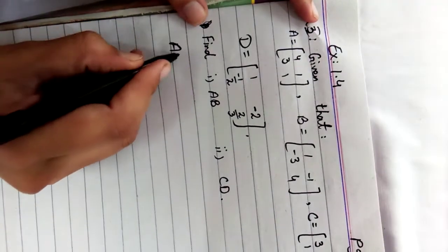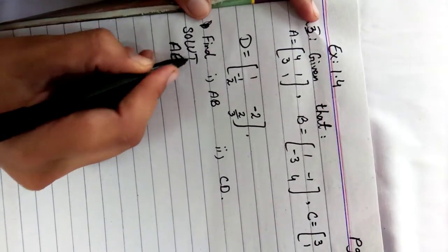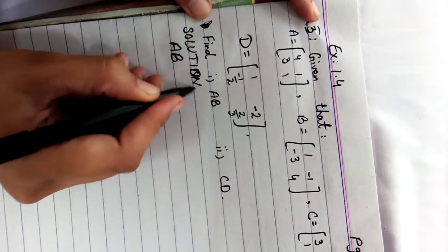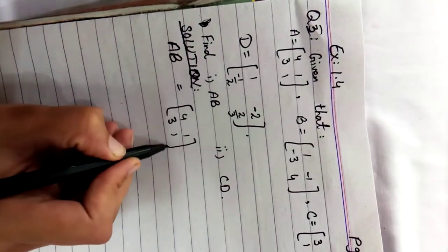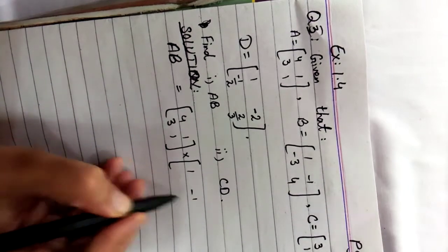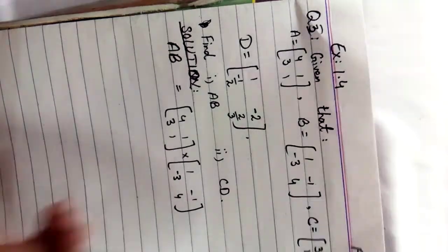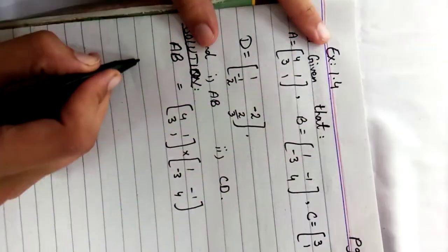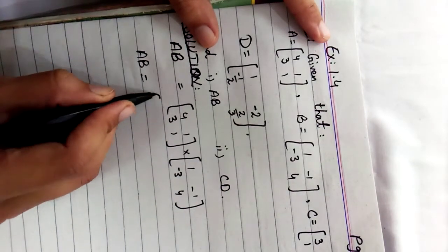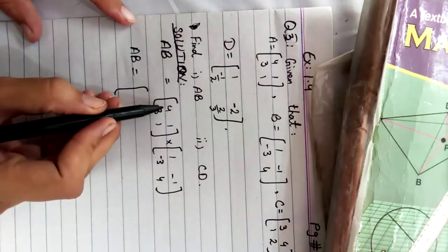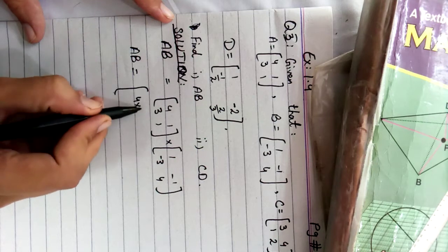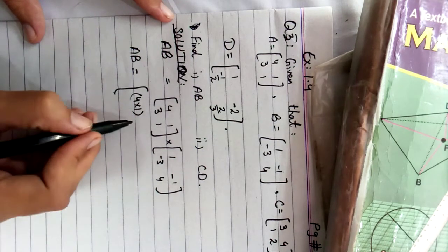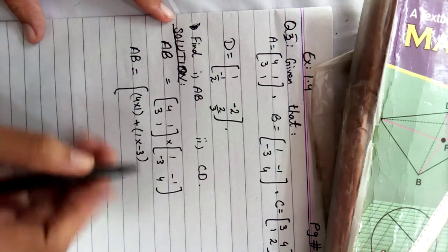We have to find the product A·B. So in the first step, A·B is equal to the matrix 4, 1, 3, 1 multiplied by 1, minus 1, minus 3, and 4. In order to find the product of this matrix, the rule is you have to take the first row and multiply it with the first column. So the first row is 4, 1 will be multiplied with the first column. So we will multiply 4 times 1 and 1 times minus 3 and put a plus sign between these two terms.